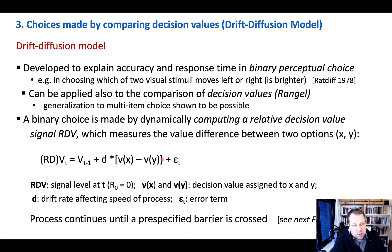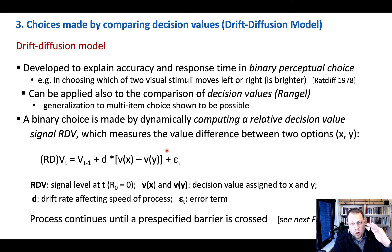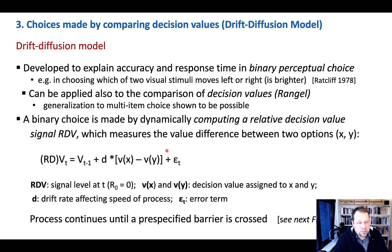There is also a difference term — the difference between one choice option's value and the other choice option's value — plus some noise. Using this relative decision value, we then rise toward the threshold of one option versus another option.